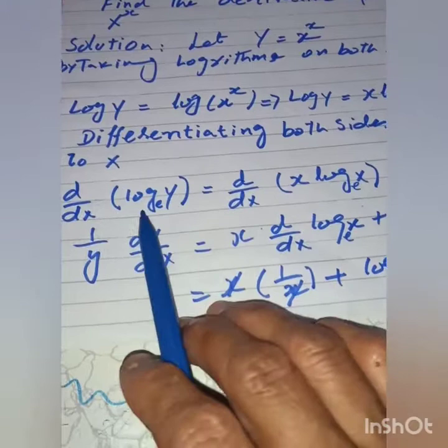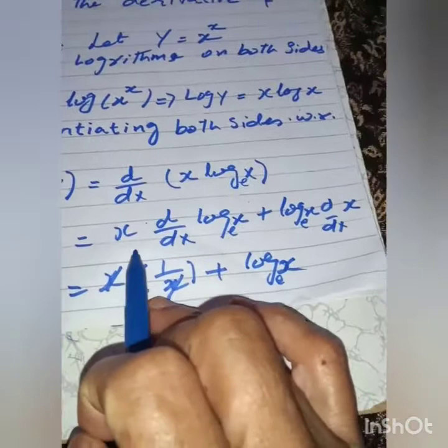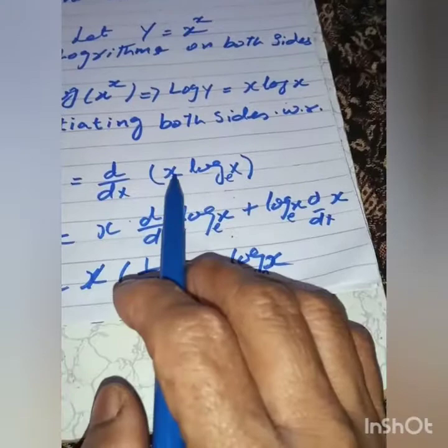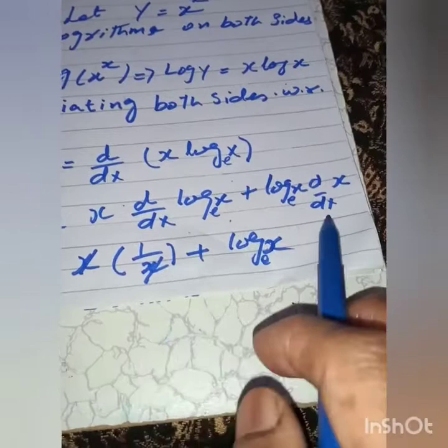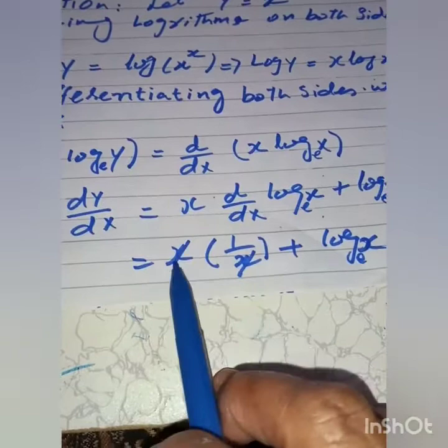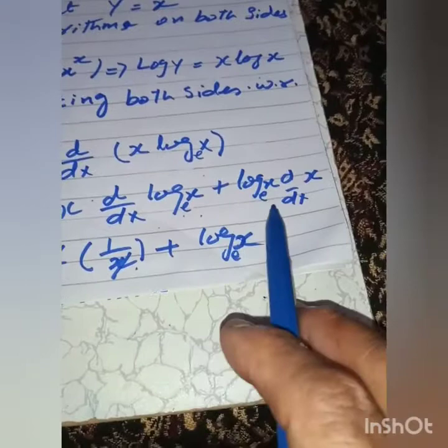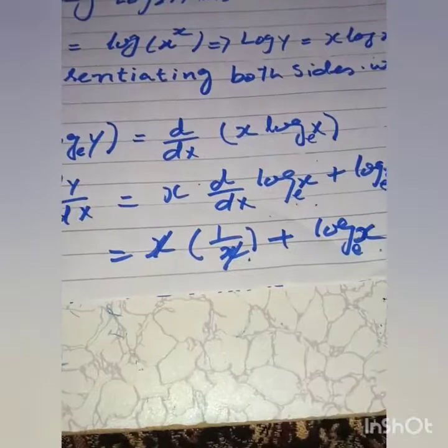By taking the differential of log(y), we get (1/y)·(dy/dx) = x · d/dx(log x) + log(x) · d/dx(x), because it is the product of two functions: first function times derivative of the second, plus second times derivative of the first. The derivative of log(x) is 1/x, so the x cancels.